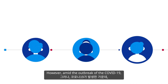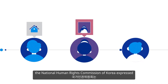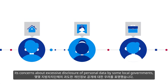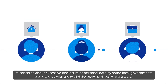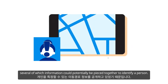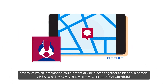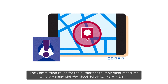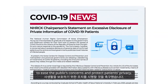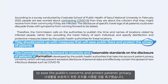However, amid the outbreak of COVID-19, the National Human Rights Commission of Korea expressed its concerns about excessive disclosure of personal data by some local governments, several pieces of which information could potentially be pieced together to identify a person. The Commission called for the authorities to implement measures to ease the public's concerns and protect patients' privacy.